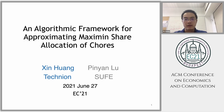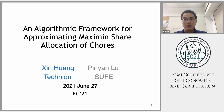We also give a lower bound of 20/17, showing you cannot prove a better approximation ratio with our framework. We also give an efficient algorithm for the 5/4 approximation.